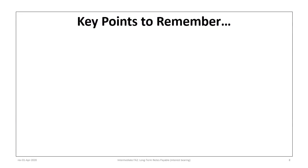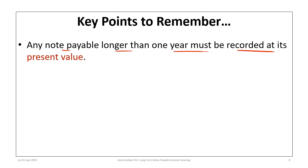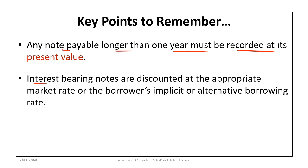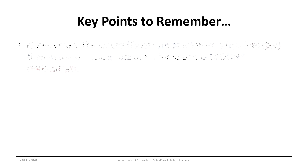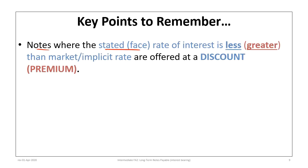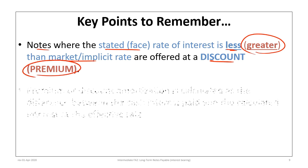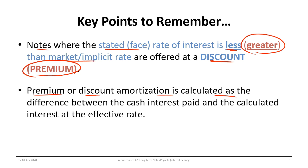Key points to remember: First, any note payable longer than one year is recorded at its present value. Second, interest-bearing notes are discounted at the appropriate market rate or the borrower's implicit or alternative borrowing rate — in this case, six percent. Third, interest expense must be accrued at every intervening year-end. Fourth, notes where the stated rate is less than the implicit rate are offered at a discount; where the stated rate is greater, as in this example, we have a premium. Premium or discount amortization equals the difference between cash interest paid and interest calculated at the effective rate.